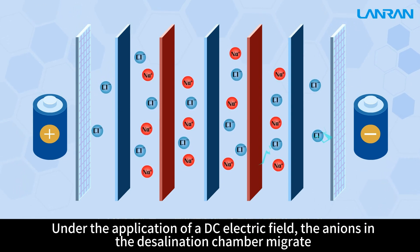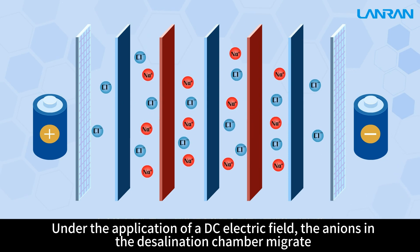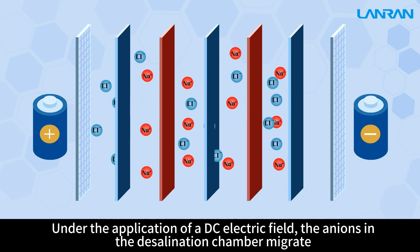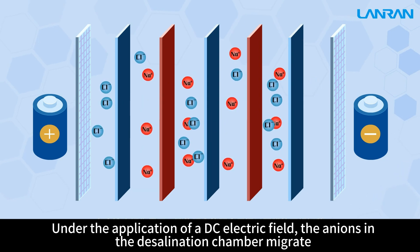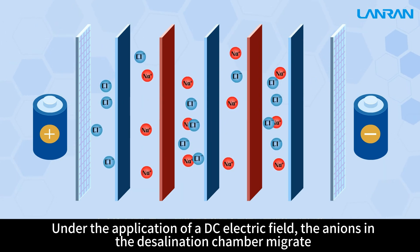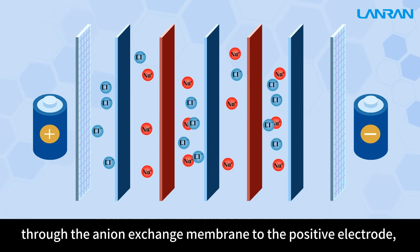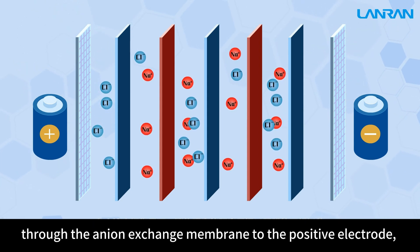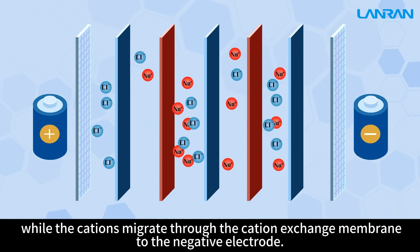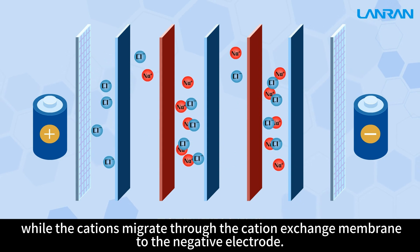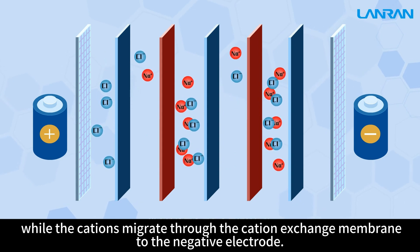Under the application of a DC electric field, the anions in the desalination chamber migrate through the anion exchange membrane to the positive electrode, while the cations migrate through the cation exchange membrane to the negative electrode.